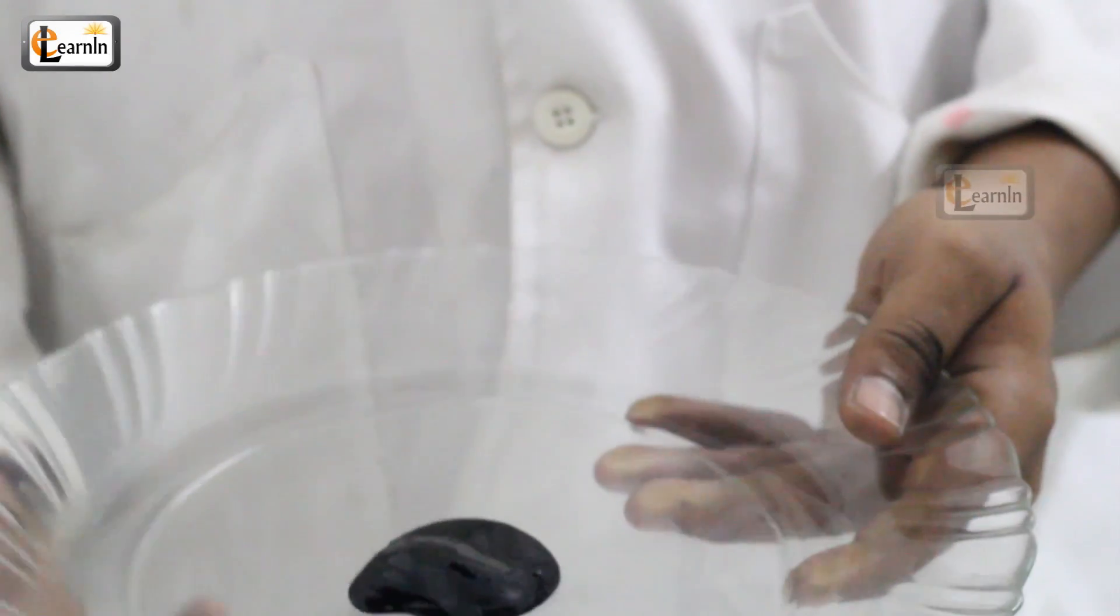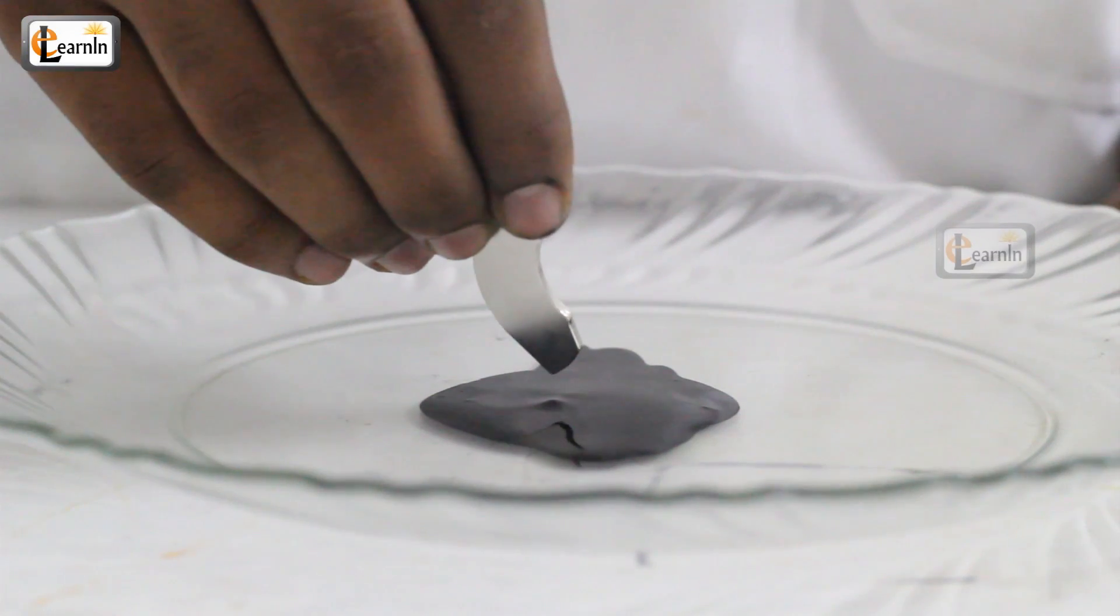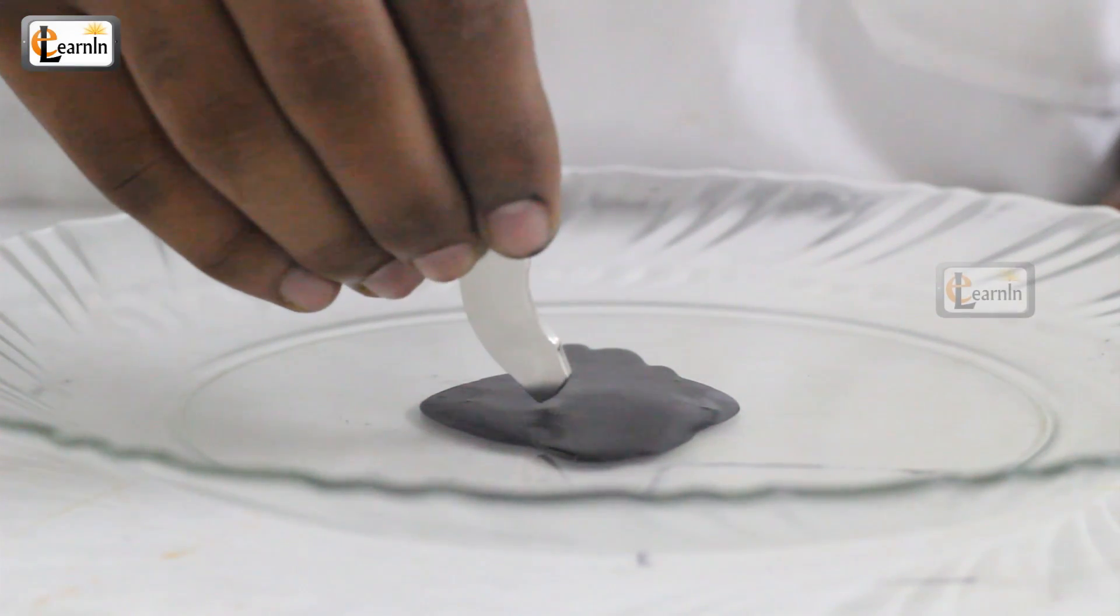Now take the magnet and just hold it right above the liquid. Notice how this liquid rises and crawls over the magnet.